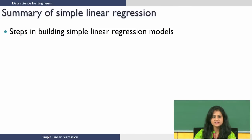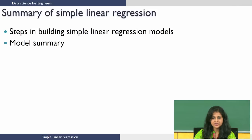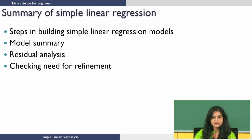Welcome to the lecture on Implementation of Multiple Linear Regression in R. To summarize from the previous lecture, we looked at steps in building a simple linear regression model where we looked at how to regress an independent variable with a dependent variable. We also looked at how to assess the model, interpret the model summary, identify significant variables, do residual analysis, check if the model needs refinement, and we built a refined model.